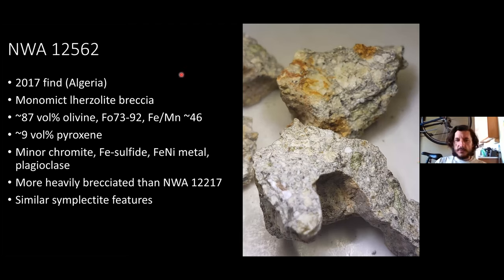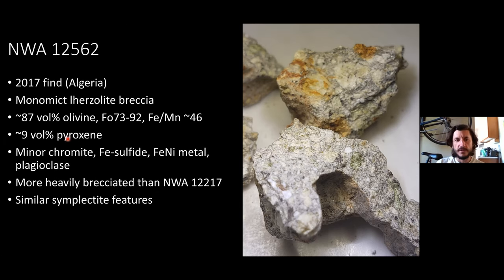NWA 12562 was the second one identified. This is a lherzolite — slightly less olivine than the previous one — again high forsterite content but more range: Fo73–92, and Fe/Mn around 46. It has 9 volume percent pyroxene, with minor chromite, iron sulfide, iron-nickel metal, and some plagioclase. In this one we didn't find any K-feldspar or silica. This sample is a lot more brecciated than NWA 12217, and both meteorites have these interesting symplectites.